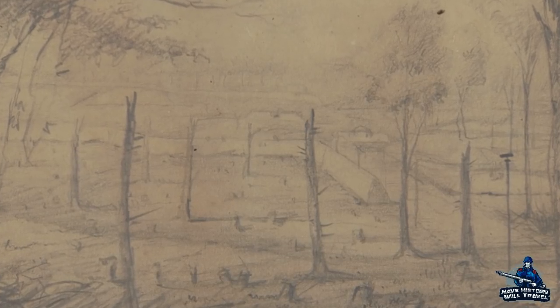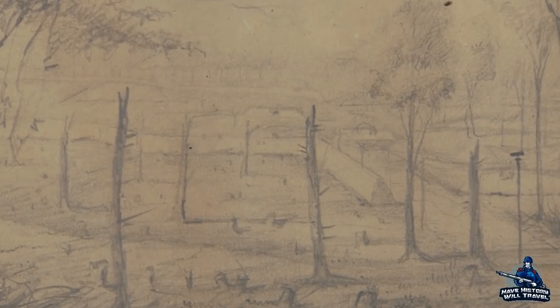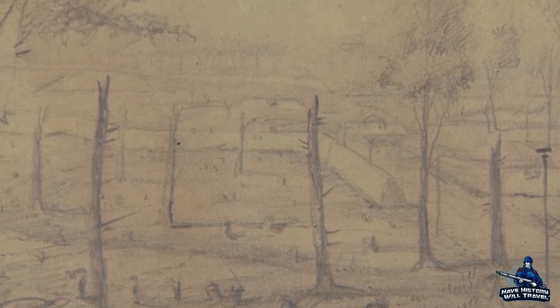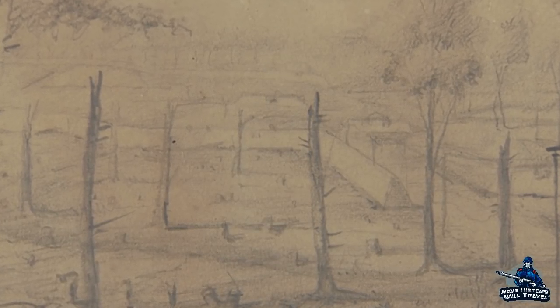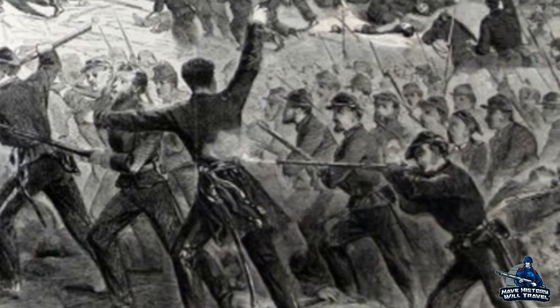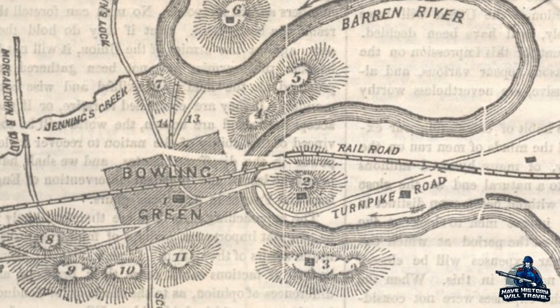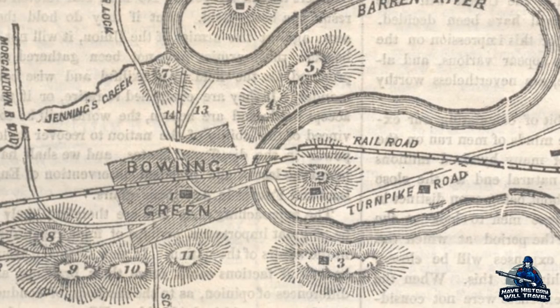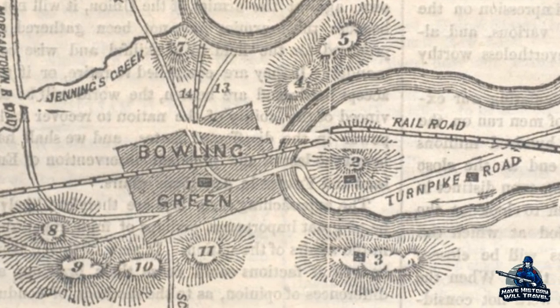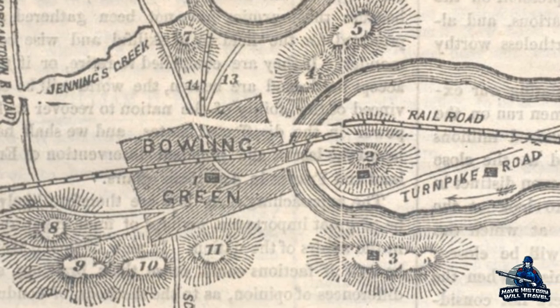Throughout 1861, the two sides met in relatively small engagements, with the Confederate defensive line in the West remaining virtually unmoved. However, on January 19, 1862, Confederate Generals George B. Crittenden and Felix Zollicoffer were defeated by Union General George H. Thomas at Mill Springs, Kentucky. Zollicoffer lost his life in the defeat. With one of the biggest threats in the eastern portion of Kentucky defeated and contained, Union forces were able to concentrate their troops against Confederate General and Commander of the Western Theater, Albert Sidney Johnston, in central Kentucky.